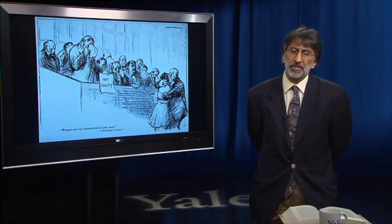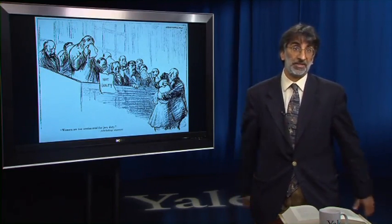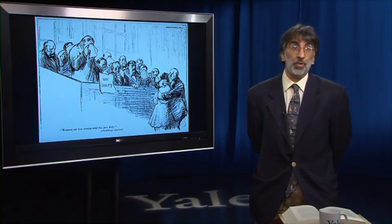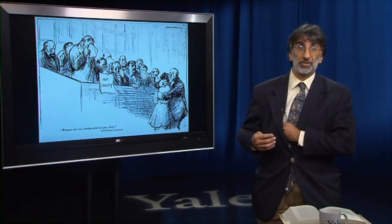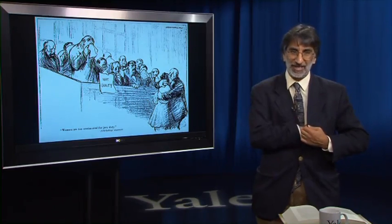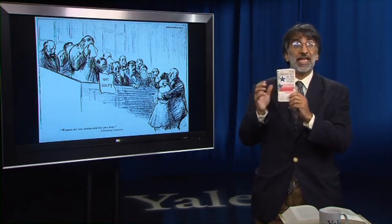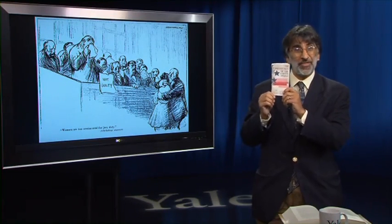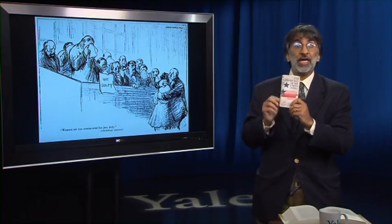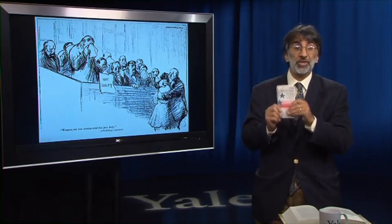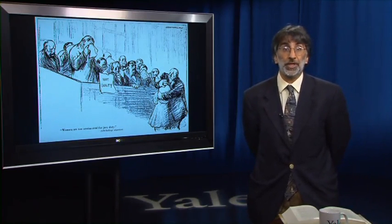We talked about looking at the Constitution through the prism of case law, in particular the case law of the Warren Court. The case law is not itself a part of this written Constitution — this terse text. All the judicial decisions, they're not formally part of this. They're part of, as it were, an unwritten Constitution, but they offer a set of lenses, a prism through which, of course, we read the terse text. And that's what we talked about in our discussion of the Warren Court and the role of precedent more generally.